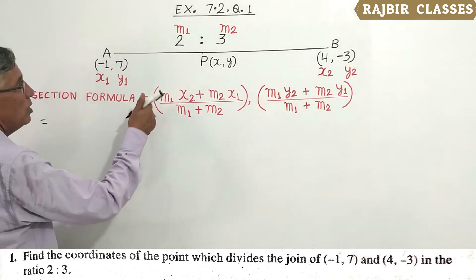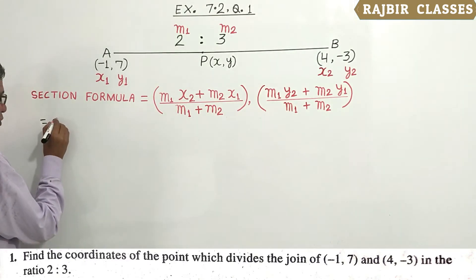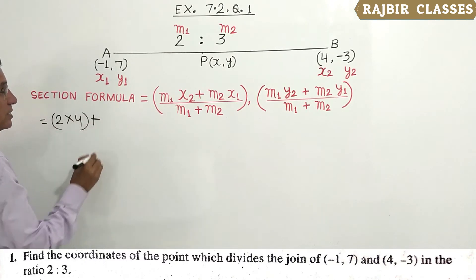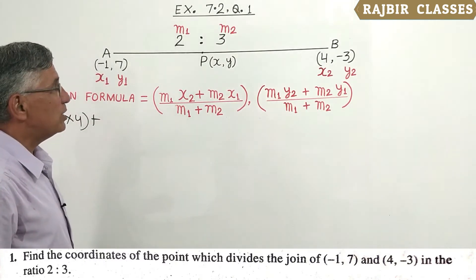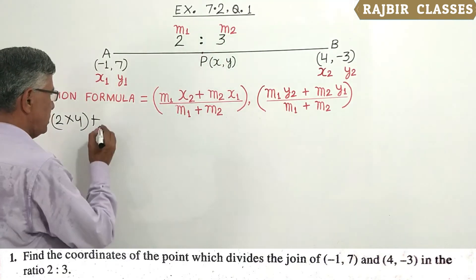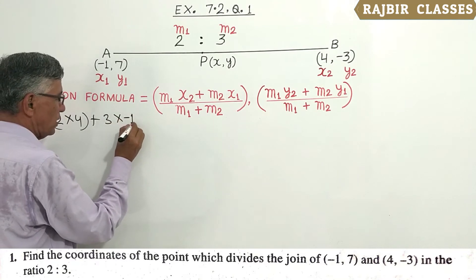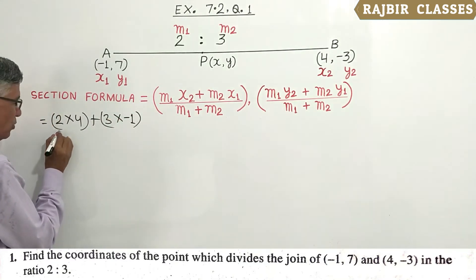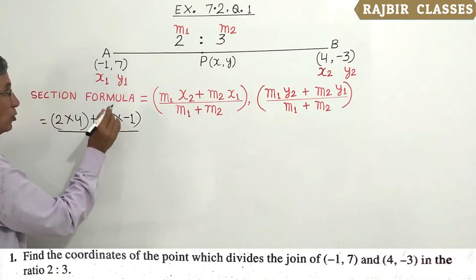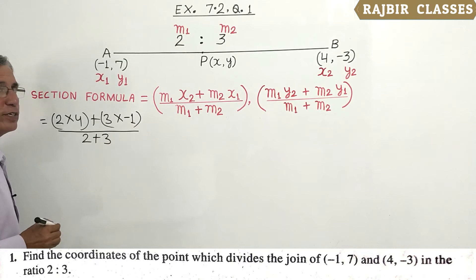For x-coordinate: M1·X2 is 2 into 4, plus M2·X1 is 3 into -1, divided by M1 plus M2, which is 2 plus 3.